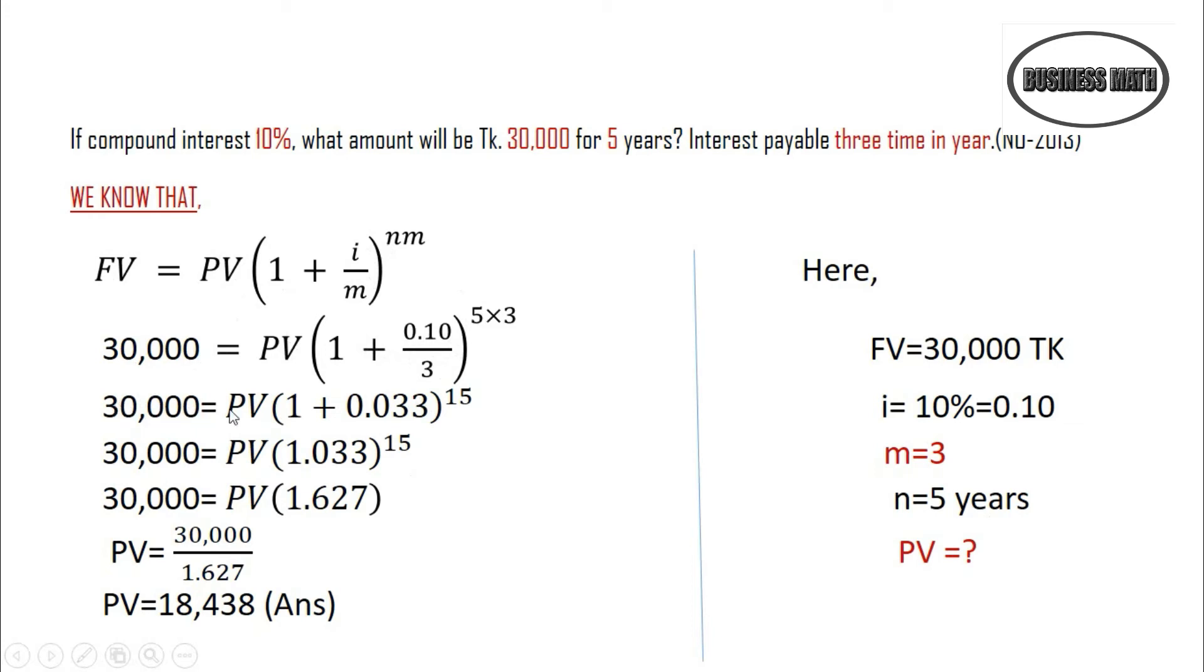30,000 equals PV times 1 plus 0.10 divided by 3. That gives us 0.033, raised to the power of 15.